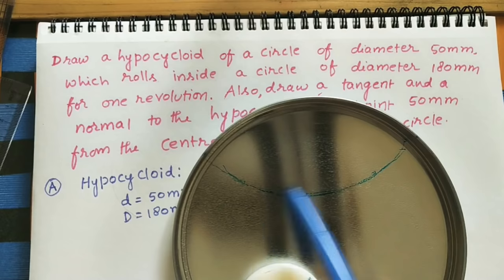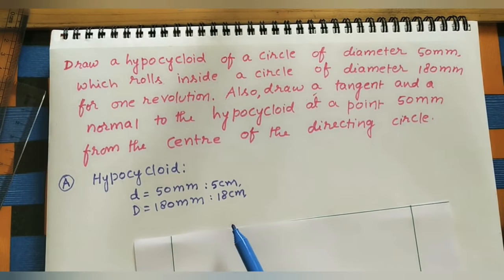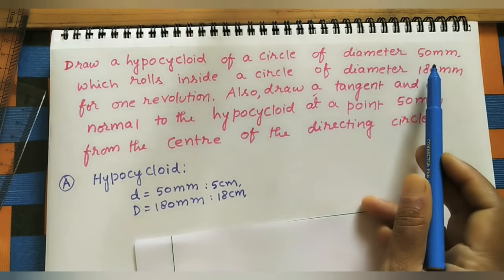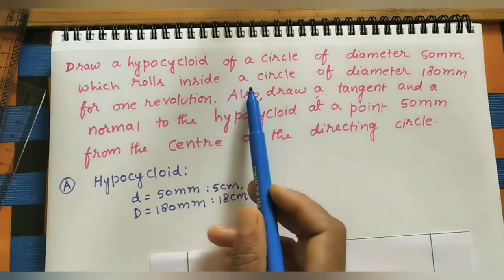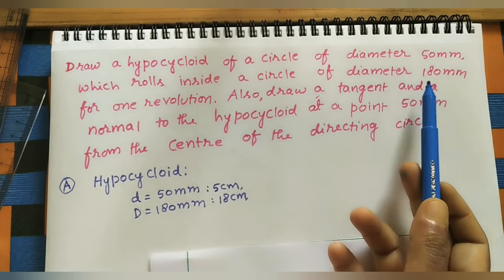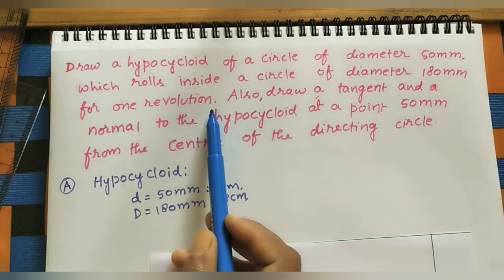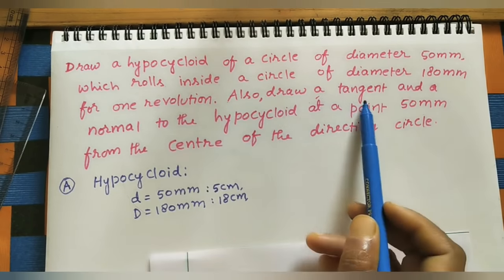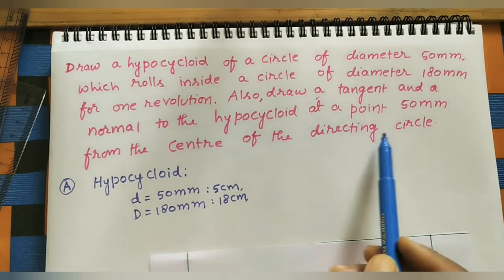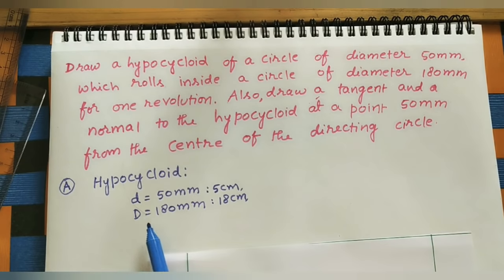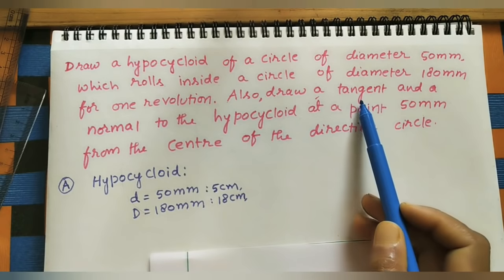Here we have to draw one hypocycloid. The smaller diameter of the circle is 50 mm (small d = 5 cm), which rolls inside a circle of diameter 180 mm (capital D = 18 cm), for one revolution. Also draw a tangent and normal to the hypocycloid at a point 50 mm from the center of the directing circle. Always remember, the directing circle means the bigger circle.